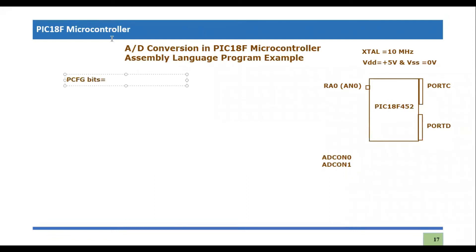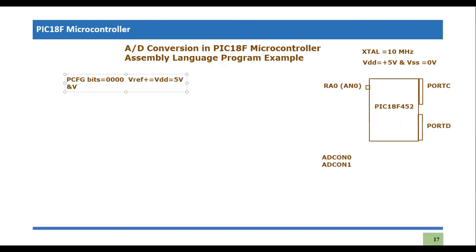The first thing to decide is the PCFG bits. We will take their default values — if all of them are zero, all channels in the PIC18F452 will be read as analog channels. So analog zero will be in analog mode by default. The positive voltage reference Vref+ will equal VDD which is 5V, and the negative voltage reference Vref- will equal VSS which is 0V.